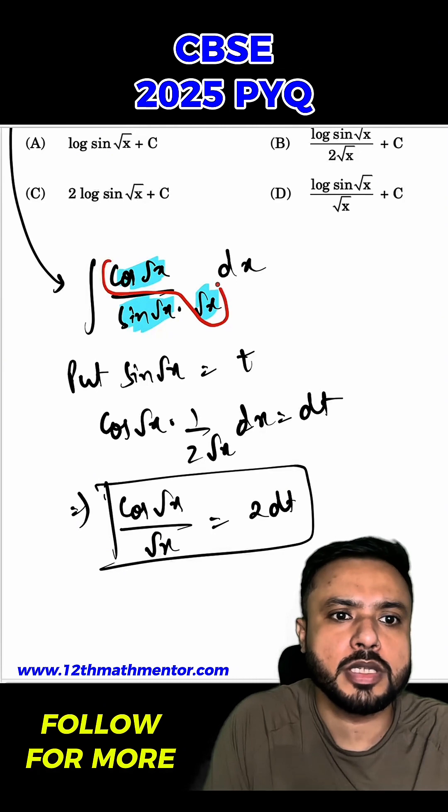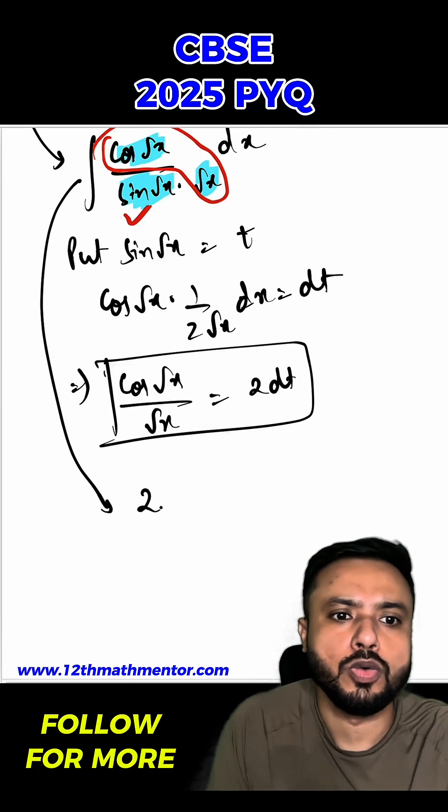That means in this particular integral I can replace this with 2 dt and this will be t. So I can write this integral in terms of t as 2 dt upon t.